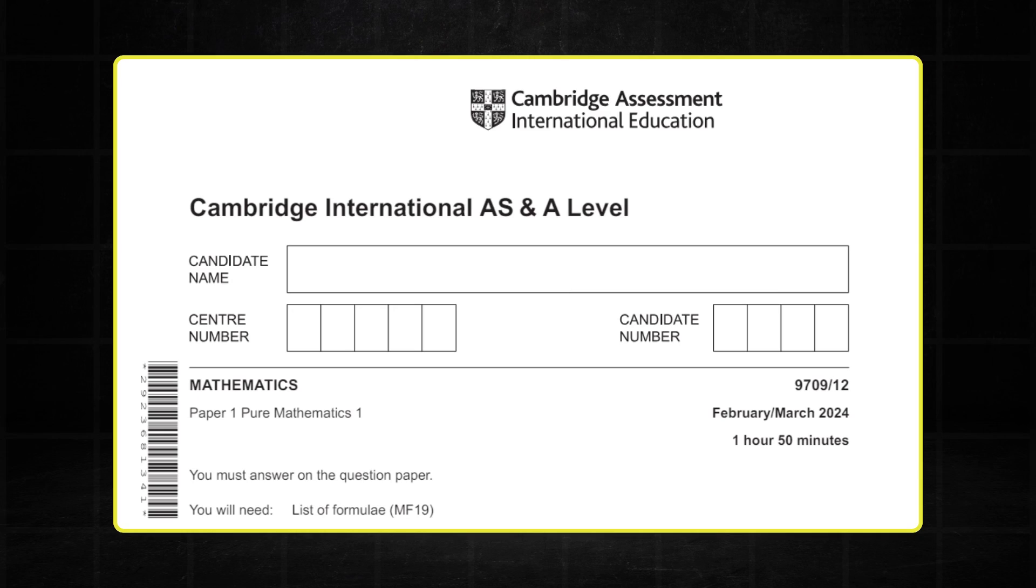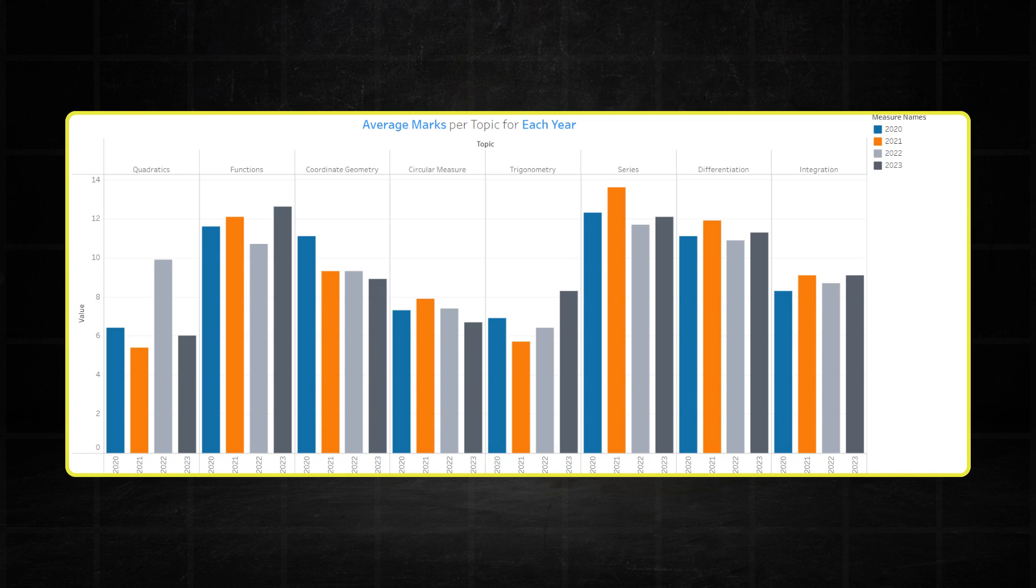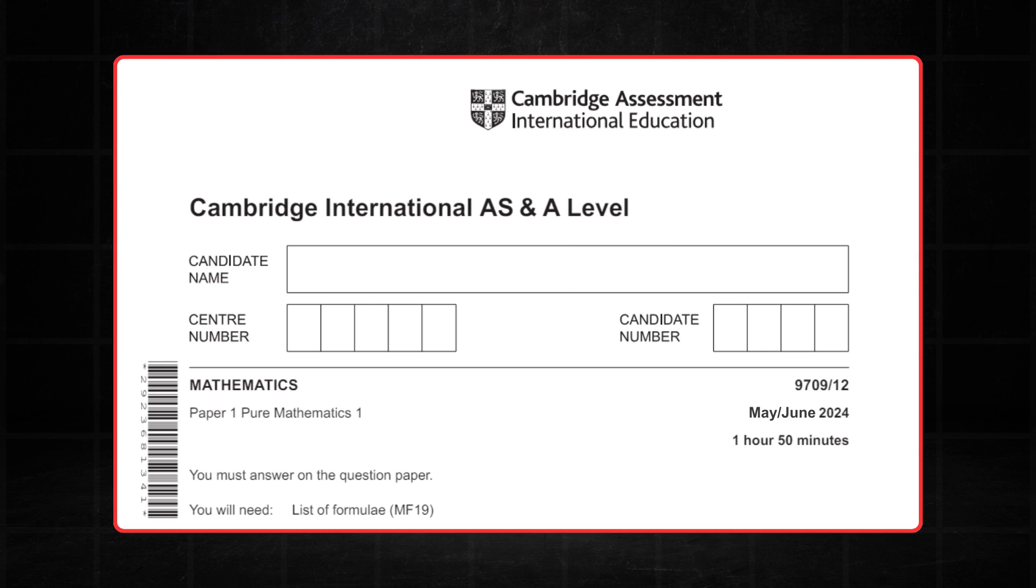To predict the May, June papers we're first going to analyze the February, March 2024 paper. Then we're going to compare it to previous years and with all that information we're going to create a mock paper of the May, June Pure 1 paper, hopefully. So make sure to watch till the end.